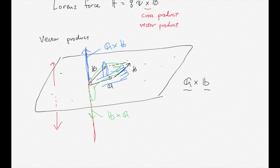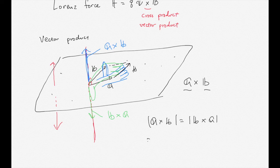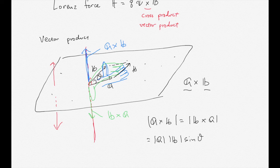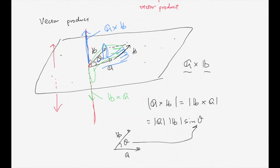So the vector product has only two choices. Two vectors create a plane, and the vector product is perpendicular to that plane. To determine the direction, you use the right-hand rule. The magnitude of A cross B is the same as B cross A, and is equal to the magnitude of A times the magnitude of B times sine of theta, where theta is the angle between the A and B vectors.